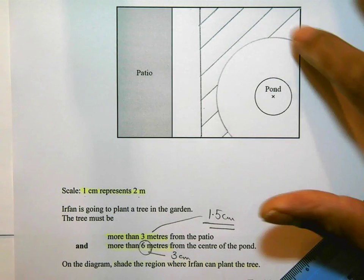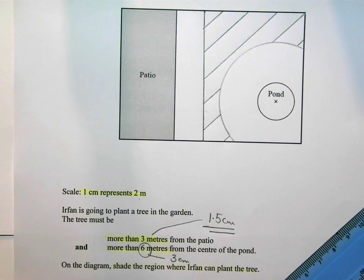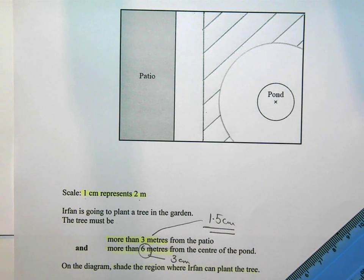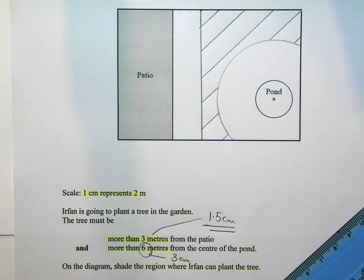So that bit there is where Irfan can plant his tree. It's a pretty straightforward question. You need to make sure you understand it. And these are the type of questions you should be getting full marks in. This question is worth three marks. Make sure you get them all.